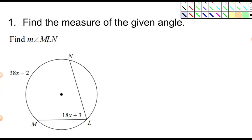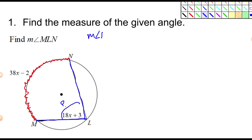Let's find the measure of the given angle — we want to find the measure of angle MLN. So this is the angle we're looking for. We know this arc here; they gave it to us. In this problem, we know the measure of angle MLN is equal to 18X plus 3, and we also know the measure of arc MN is equal to 38X subtract 2.